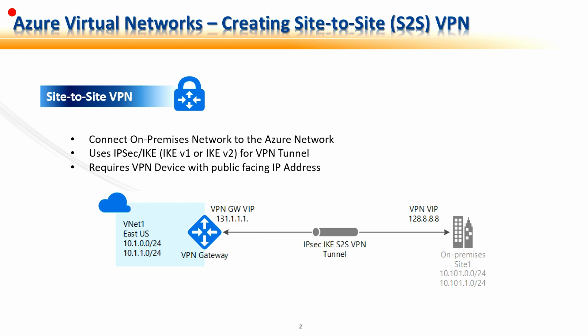Site-to-Site uses IPSec or IKE — IKE version 1 or IKE version 2 — VPN tunnel. IPSec, also known as Internet Protocol Security or IP Security Protocol, defines the architecture for security services for IP network traffic and the framework for providing security at the IP layer. IKE v1 or v2 is a VPN protocol standing for Internet Key Exchange, developed by Microsoft in partnership with Cisco. One very important point: your on-premises network IP address space should not overlap the address space of the Azure virtual network, otherwise those connections will not work.